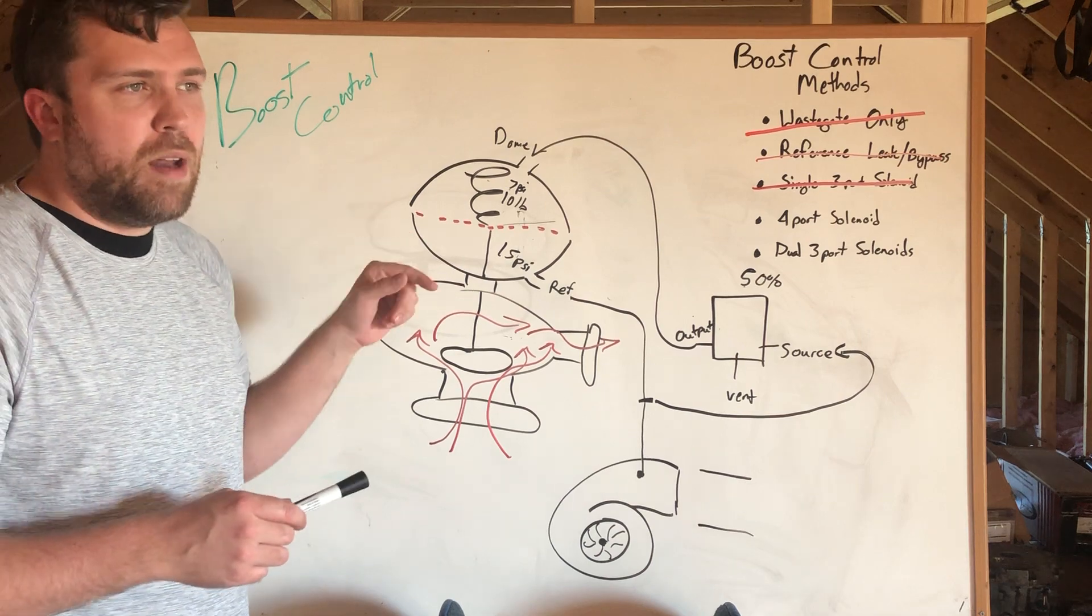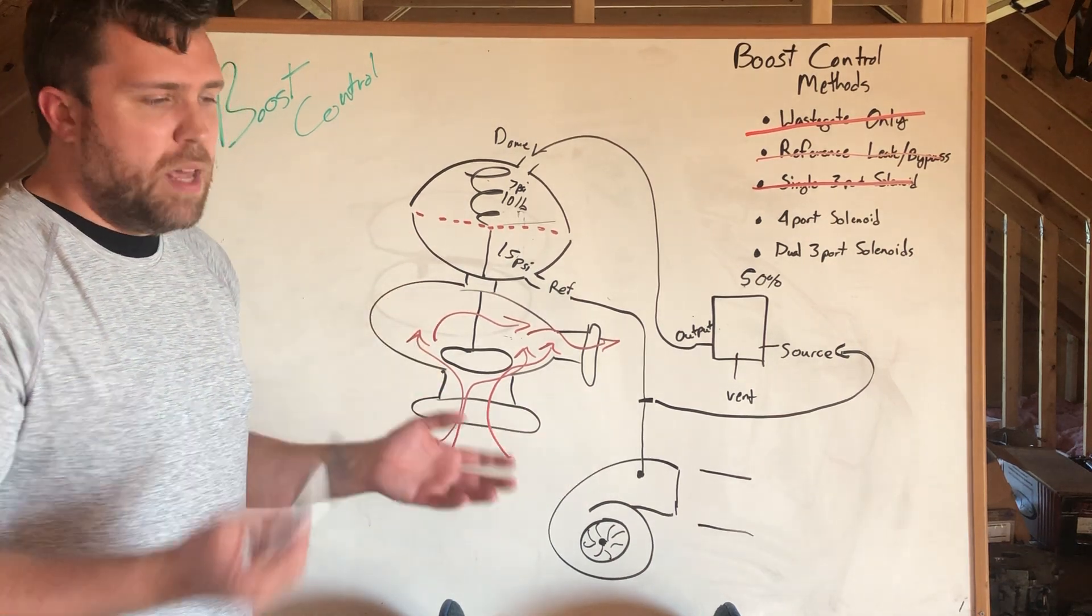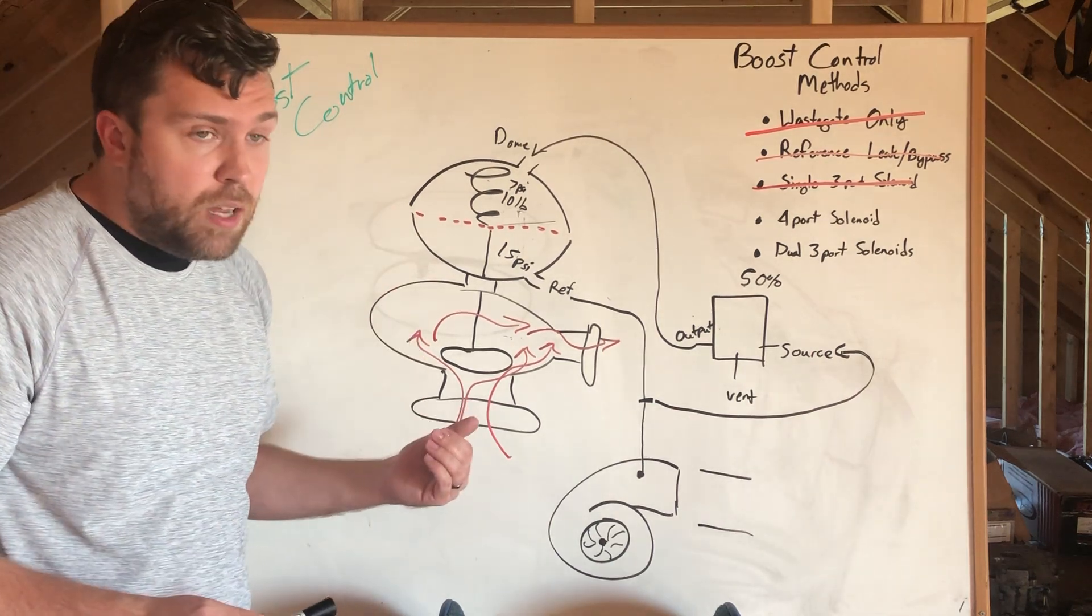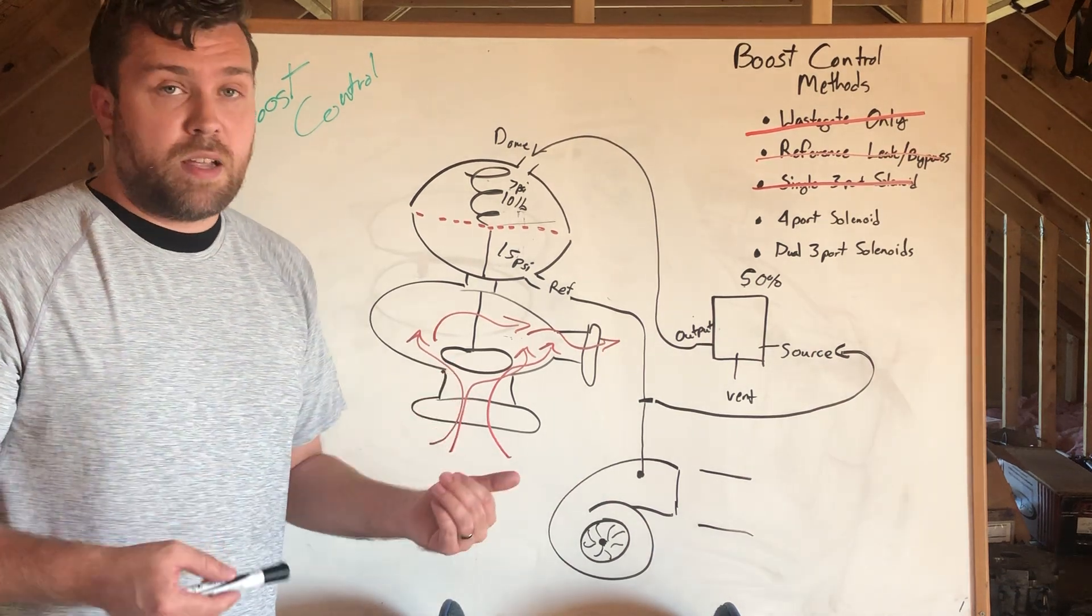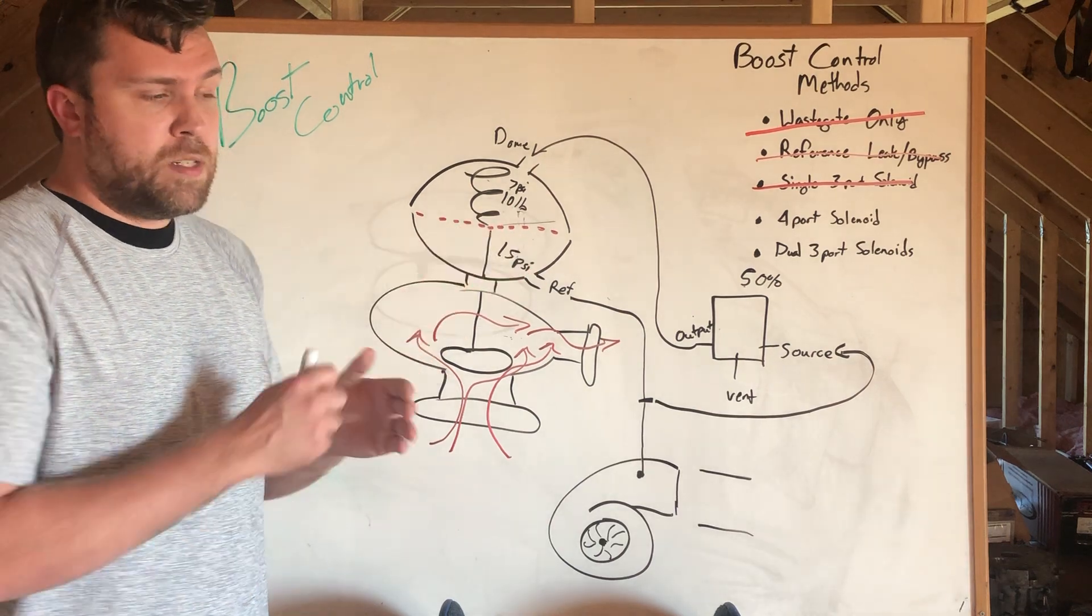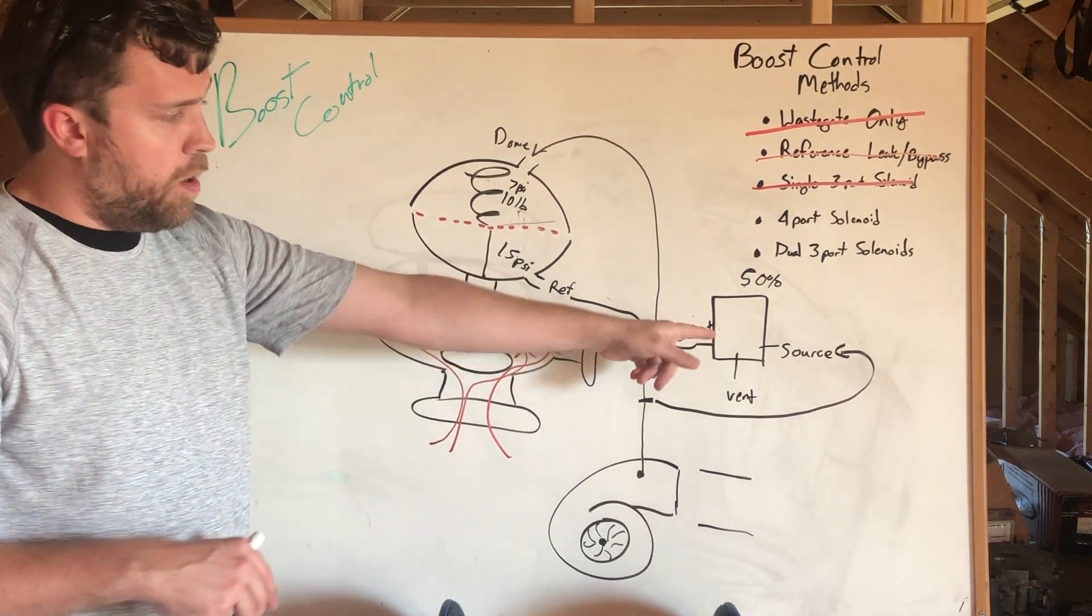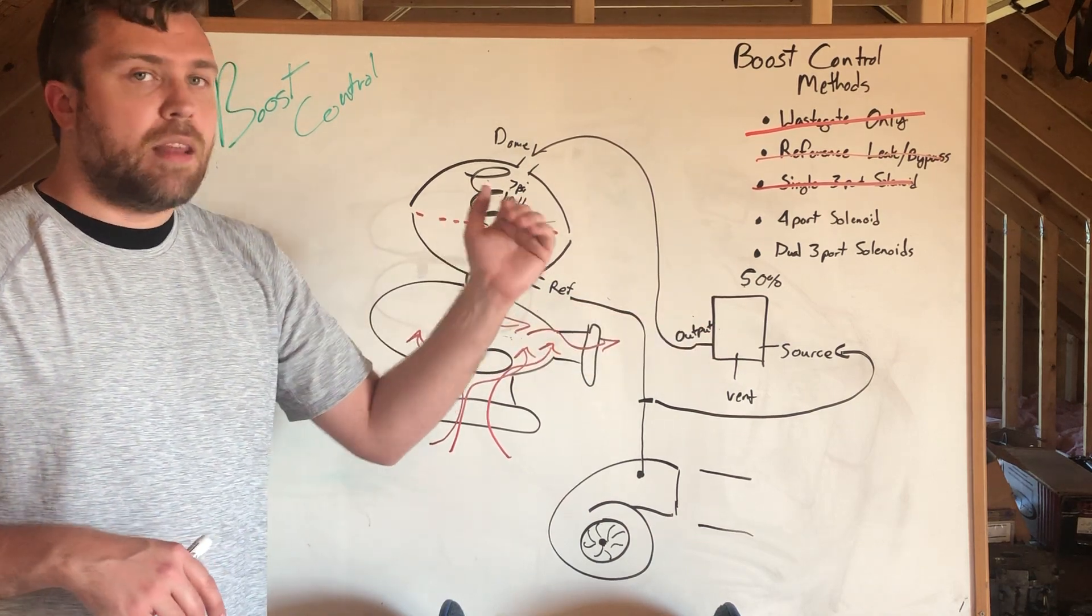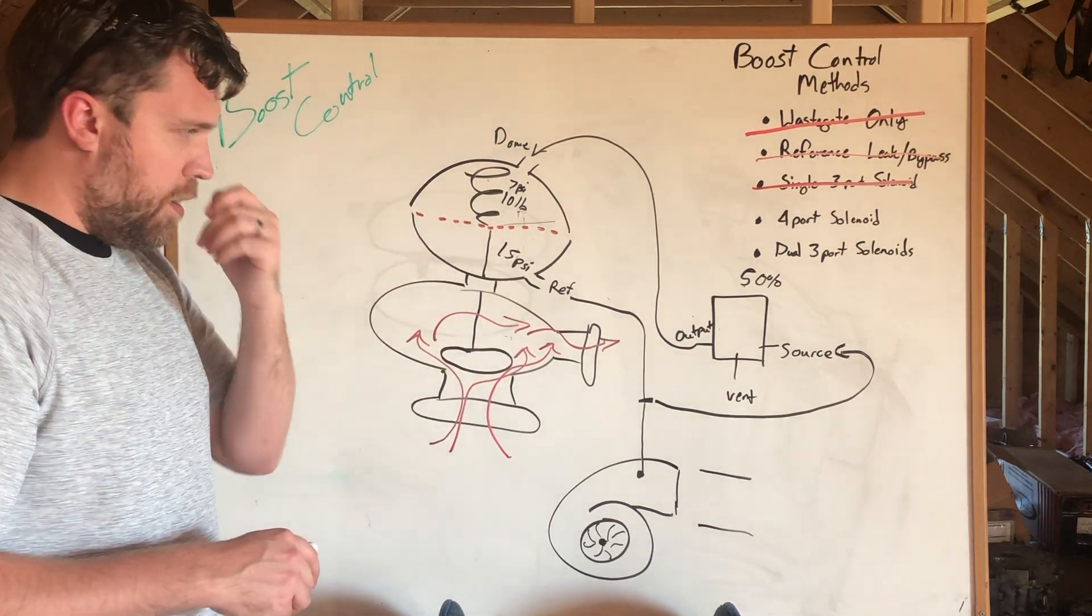Your only, the minimum amount of boost that you can make is whatever you would make on wastegate. So if you want to know what the minimum is what I always do is say what spring have you got in it or how much does it make on gate only and then I'll know right out of the gate when I start commanding a set boost I've got to start my table for the solenoid at least above that. There's no way that I can make any less than in this case 10 pounds of boost.